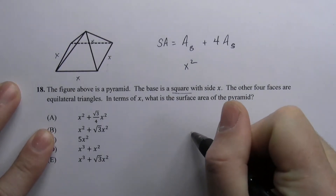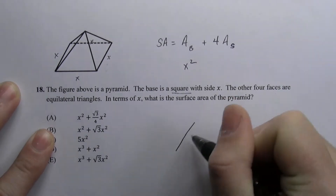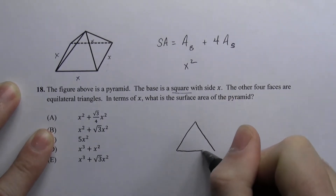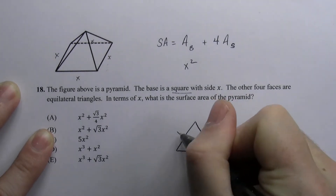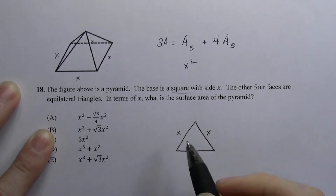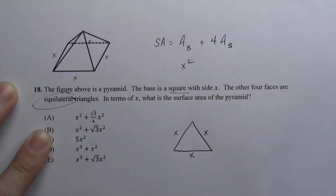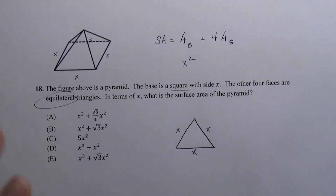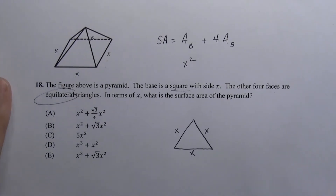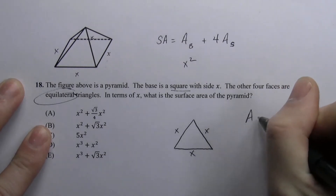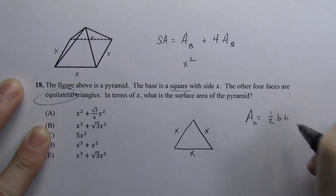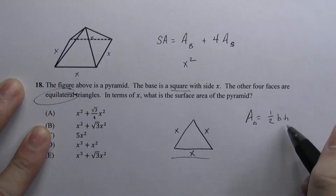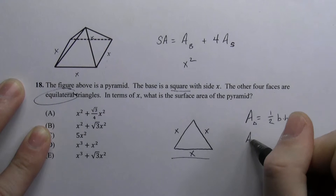Specifically, we're going to look at one of the equilateral triangles. Flat, it's much easier to think about. We know all three sides are x and x and x because it says they're equilateral triangles — equilateral means three equal sides. So we need to find the area of these triangles. The area of a triangle is one half base times height, and the base is x.